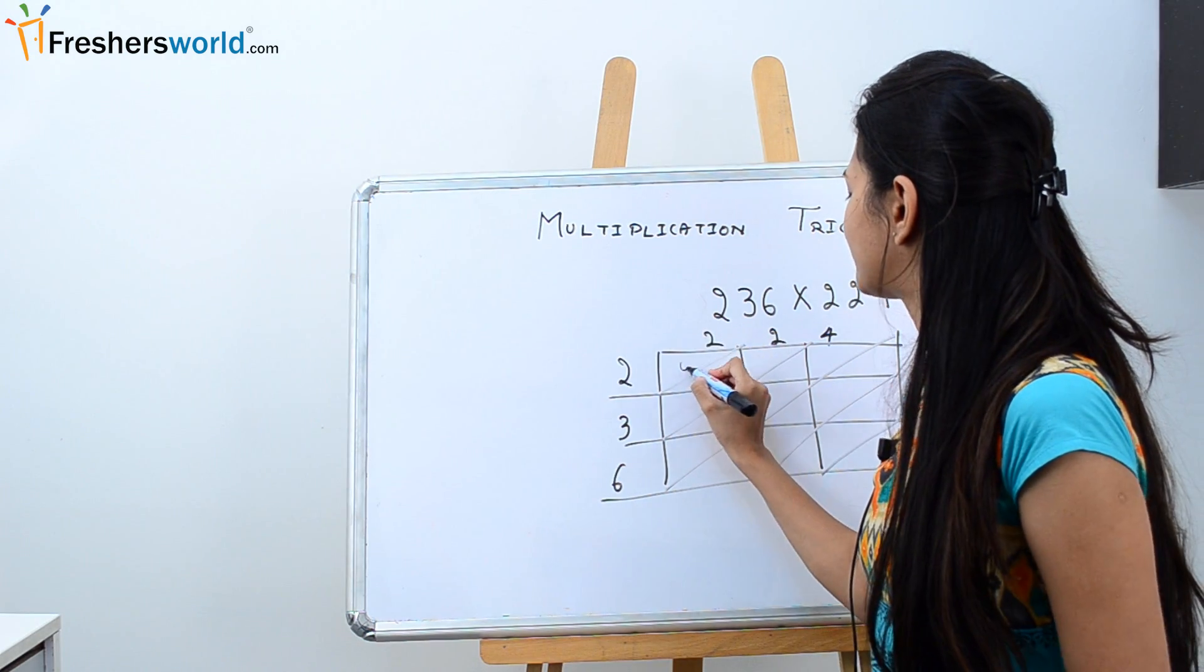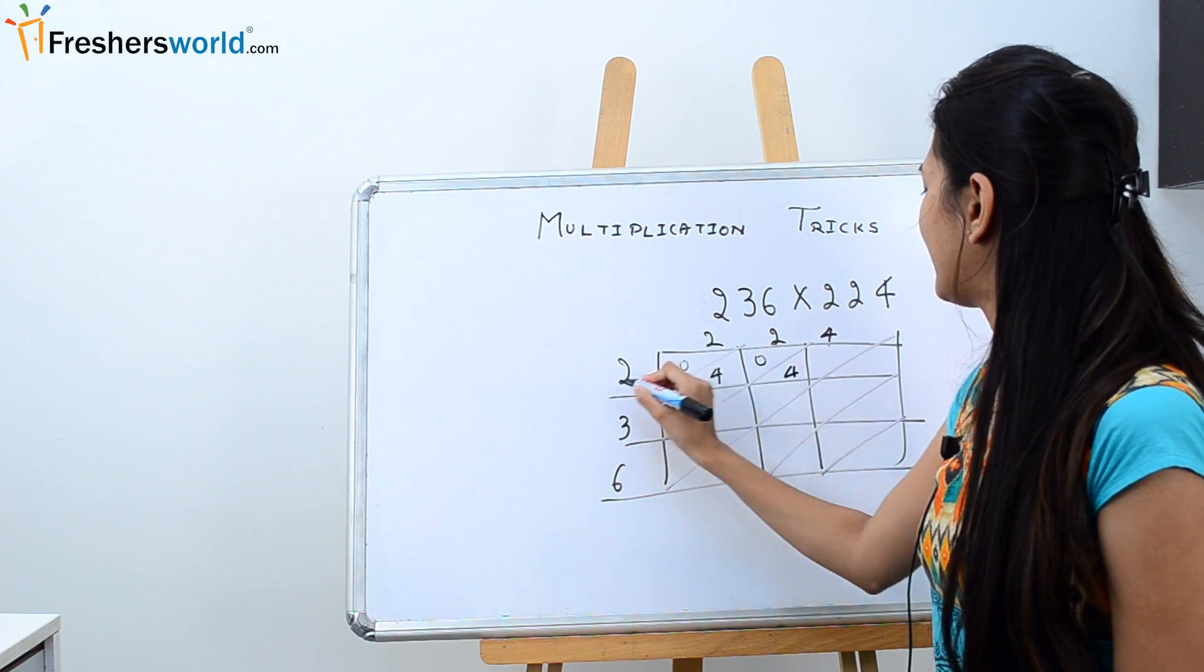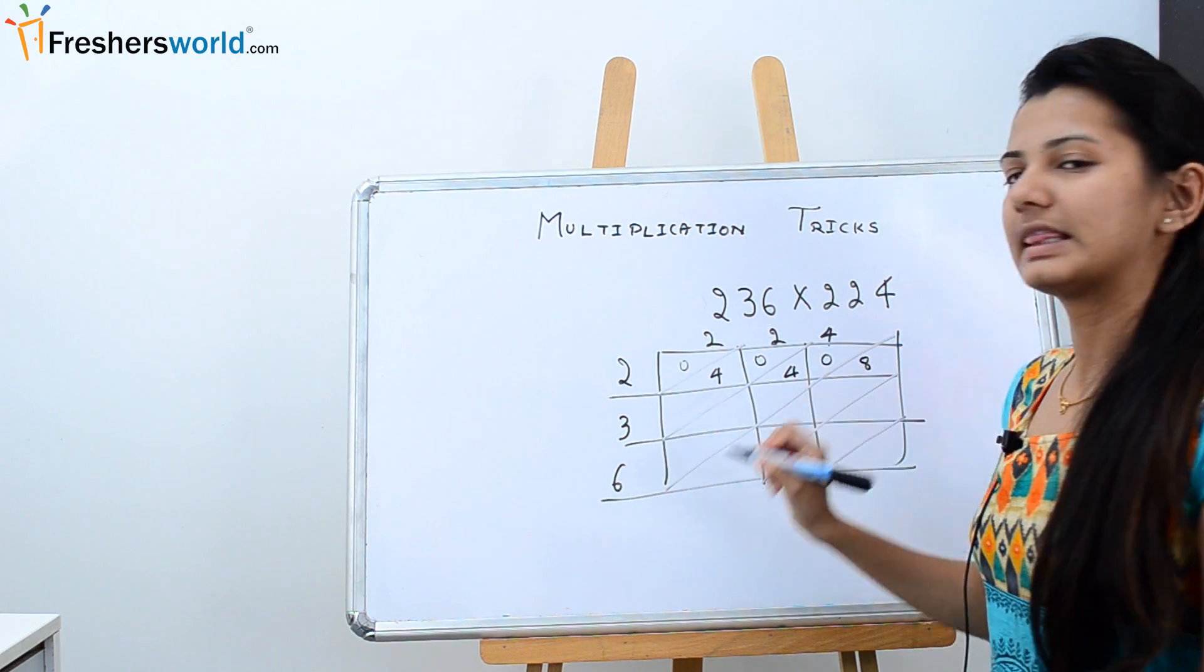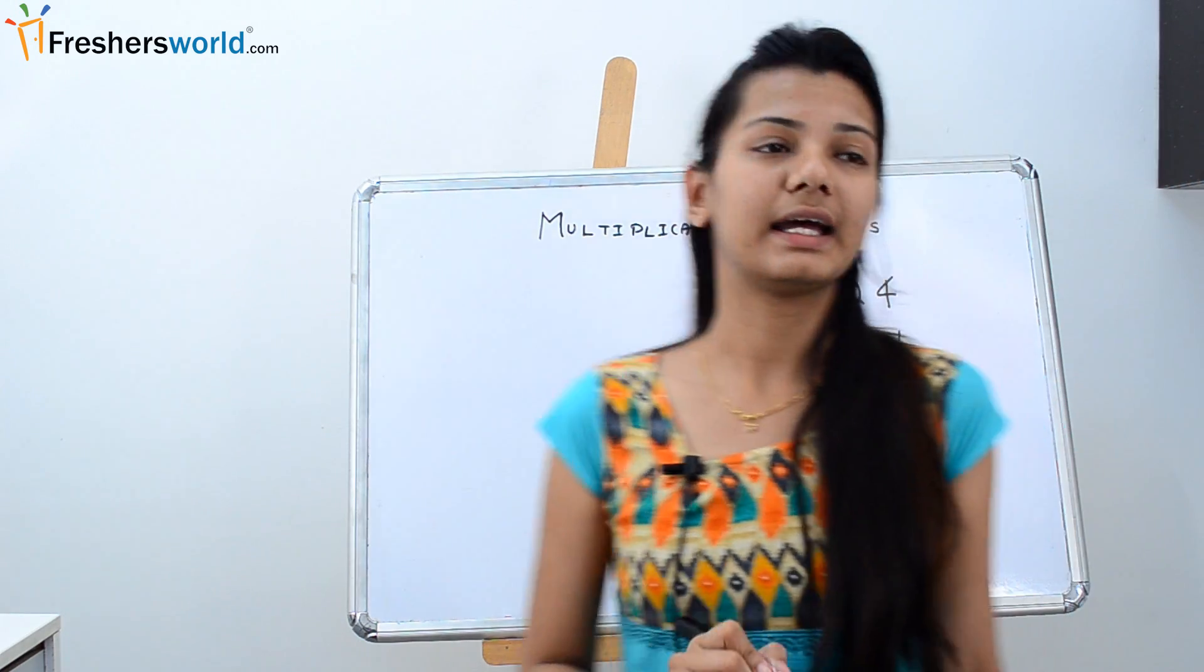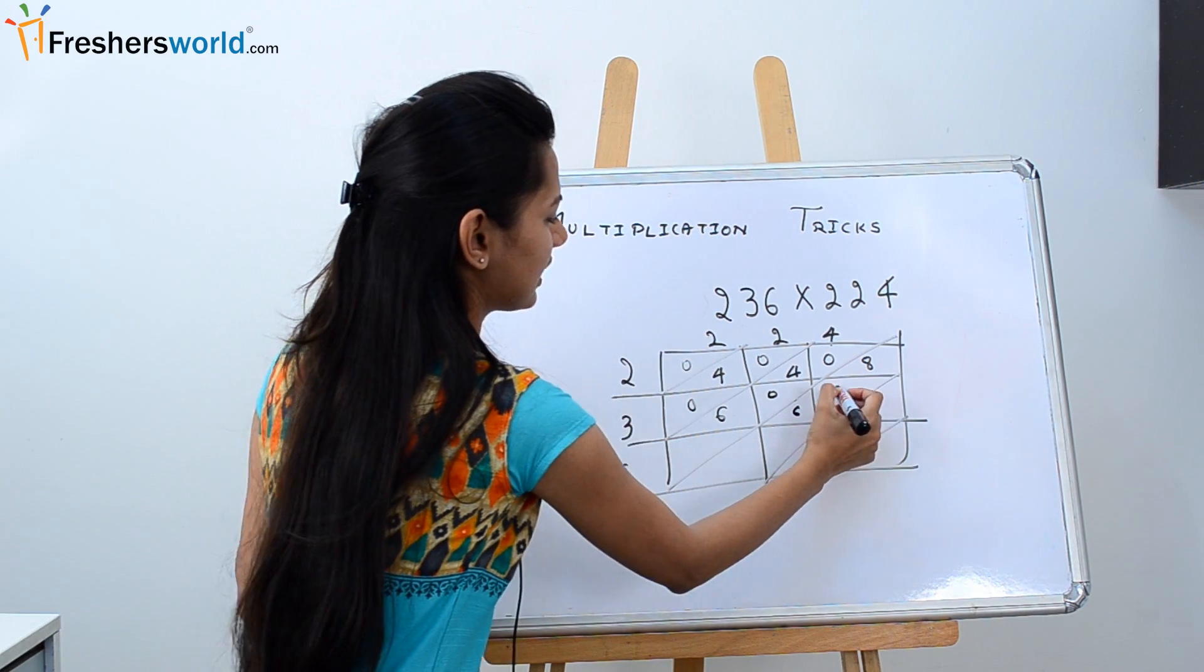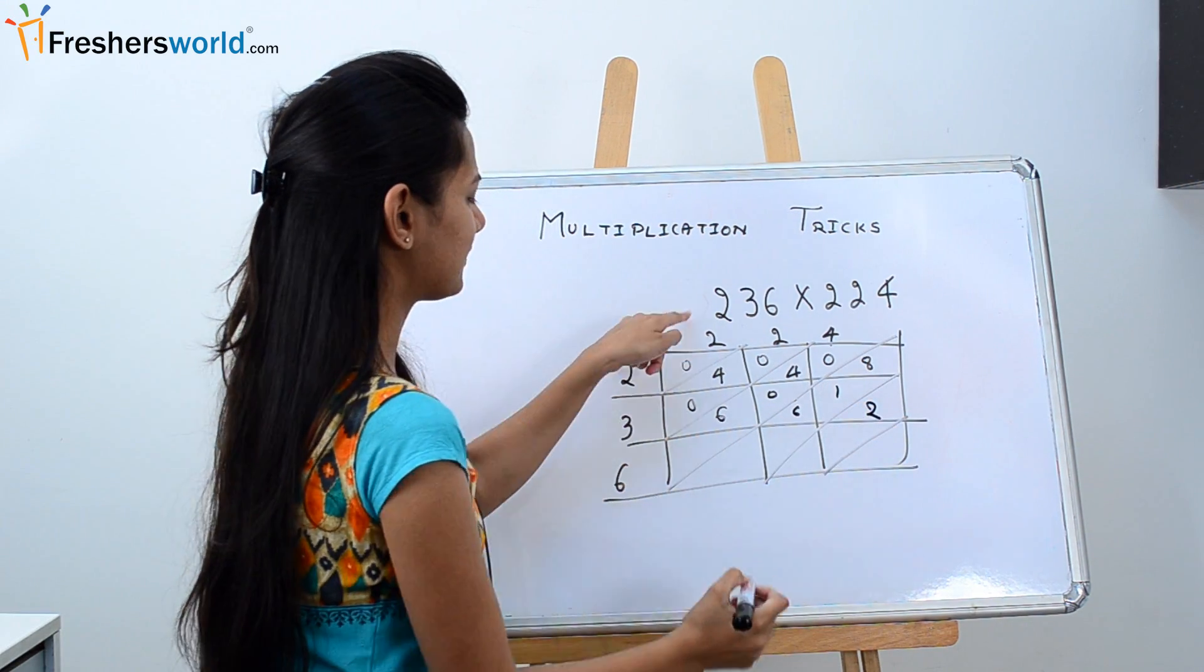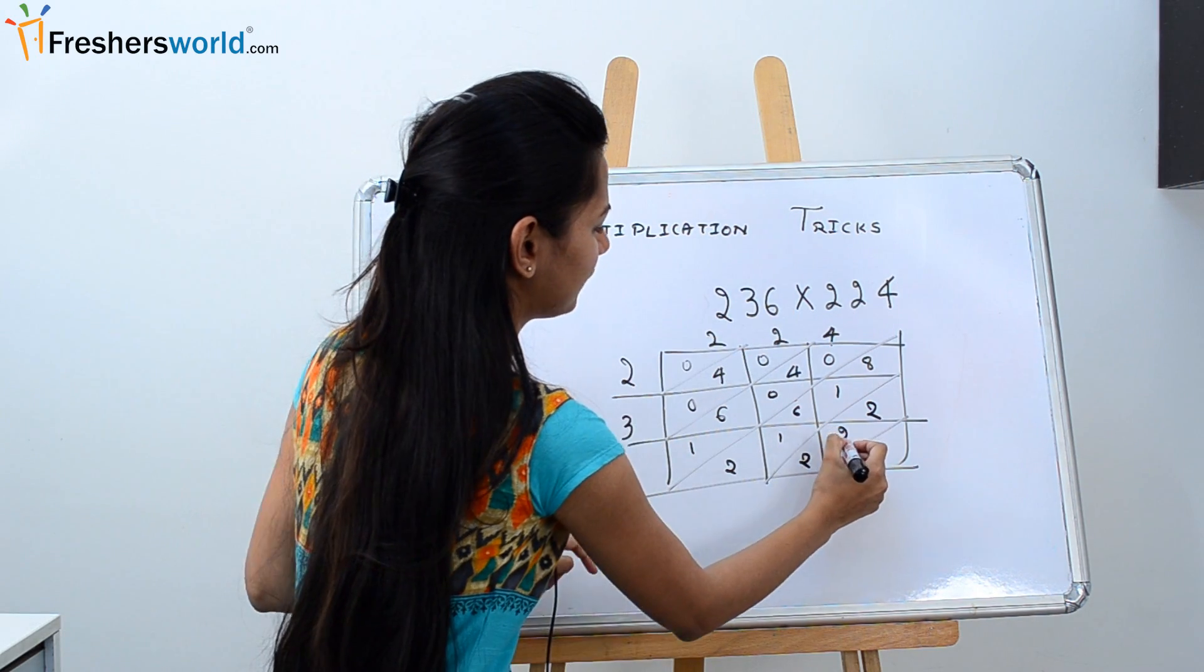Now I know that 2 into 2 is 4, so 0 and 4. Again, 2 into 2 is 4, and 2 fours are 8. Then 3 twos are 6, so 0 6. Again I have 3 twos are 6, and 3 fours are 12. Then I have 6 twos are 12. 6 twos are 12, and 6 fours are 24.